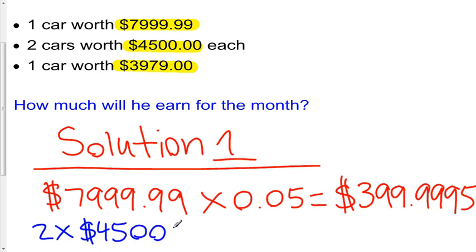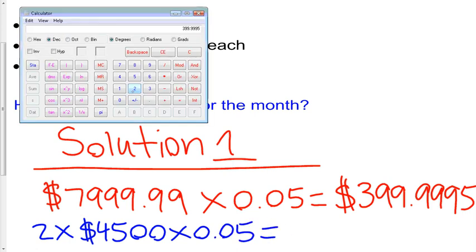Okay, and we multiply this by 0.05, and what do we get? Well, we get two times 4,500 times 0.05, and that's $450 in commission.